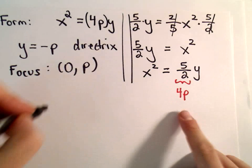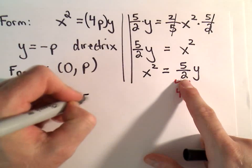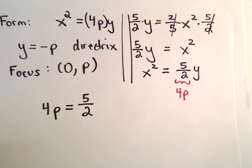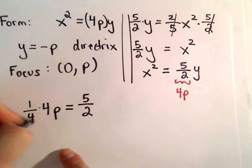Well, okay, it says, so we need to solve for p. So it says 4 times some number is going to equal 5 over 2. All right, to solve for p, we can just multiply both sides by 1 over 4.